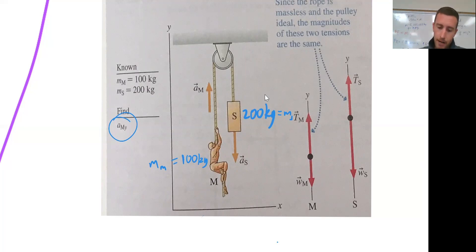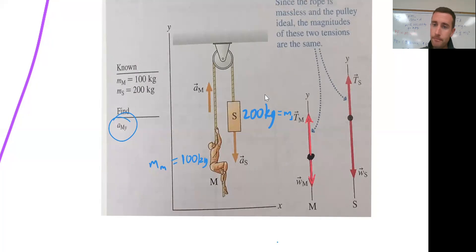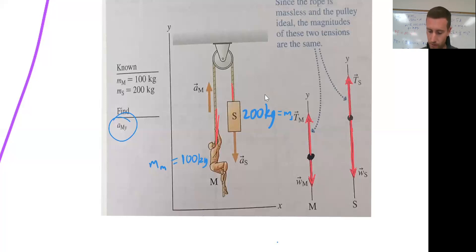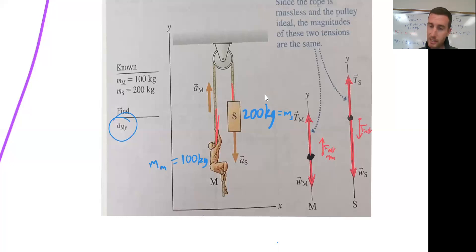Step one: draw the free body diagrams. For the man, the tension force is going up — the rope is pulling him up — and the thing pulling him down is his own weight. The tension force on the set is also going up, with its weight going down, but the set's weight is much bigger than the man's weight. So the net force on the man is upward, and the net force on the set is downward.